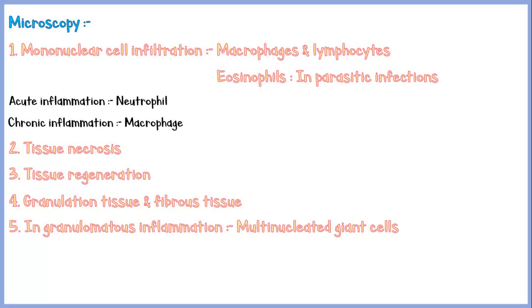Granulomatous inflammation is a special type of chronic inflammation which is commonly seen in tuberculosis. I have done a separate video on granulomatous inflammation — if you are interested, watch that video as well. I will put a link in the description.